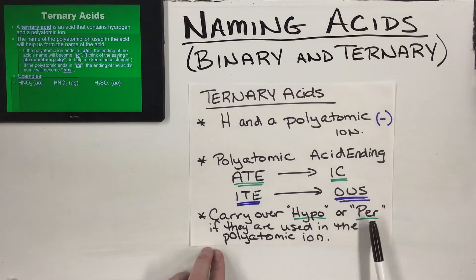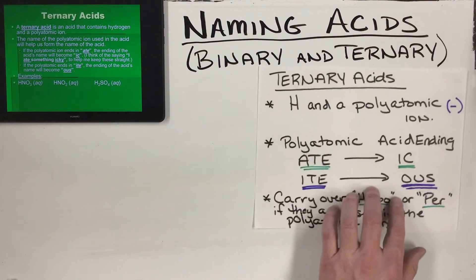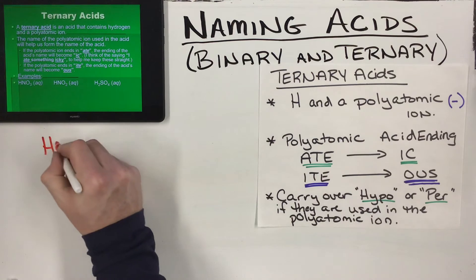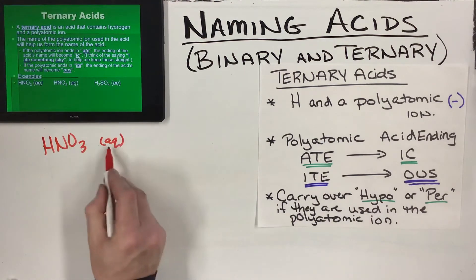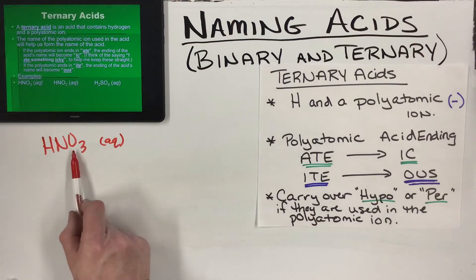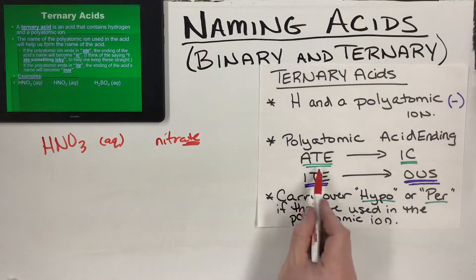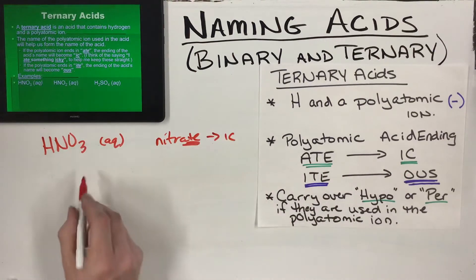If there is a hypo or per used with the polyatomic, they get carried over and will be in the acid's name as well. Let's do the examples. Our first one: HNO3, and it's aqueous. I never use hydro when I'm doing a ternary acid - hydro just meant it was binary. Look: one, two, three different elements here - hydrogen, nitrogen, oxygen. So hydro is out the window for these. I'm going right to that polyatomic and checking to see what I'm going to be using. NO3, that's nitrate, so that means I'm going to be using -ic at the end. So nitrate becomes nitric acid.